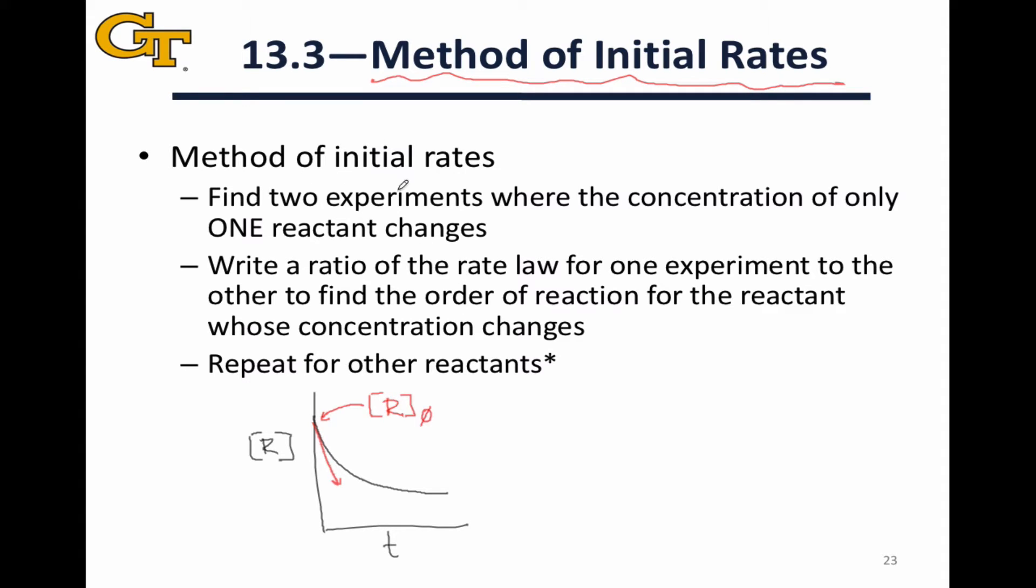The idea behind a typical method of initial rates problem is to ultimately determine an order of reaction, a kinetic order, for one or more reactants in a chemical reaction. To do this, we first run many different reactions with different initial concentrations and measure their initial rates.